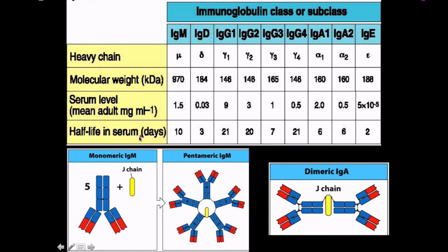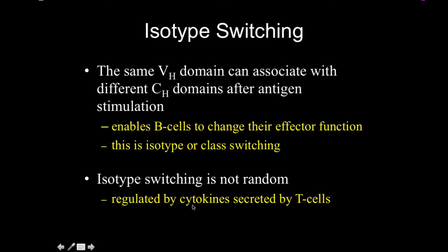The half-lives tell us about the stability of the proteins and how much of them will be present in each complex. There is monomeric IgM and pentameric IgM, connected by the J chain. IgA can also be dimeric, connected by that J chain. The advantage is an increased surface area for collisions, which increases the probability of binding to a pathogen, toxin, or whatever doesn't belong there.